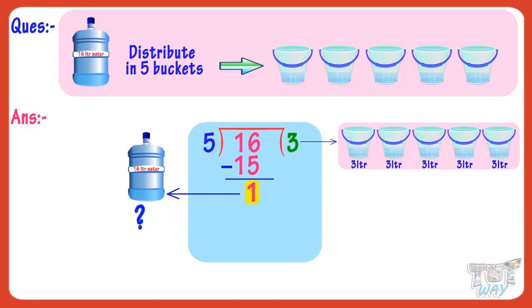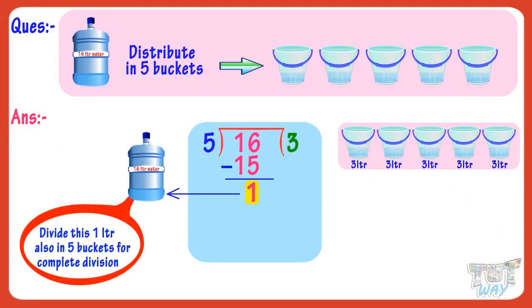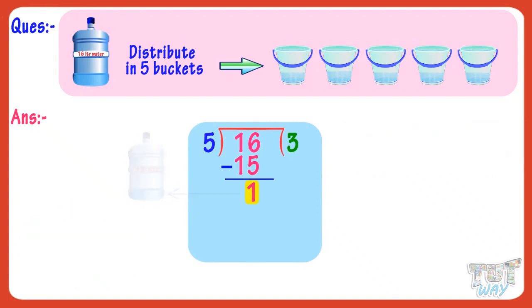Now, what about that 1 liter which is left? If we want to find how 16 liters of water will be completely divided into 5 buckets, we will divide this 1 liter further, and our answer will be in decimals. That's what we are going to learn now — finding the answer in decimals, or keep on dividing the number which is less than the divisor.